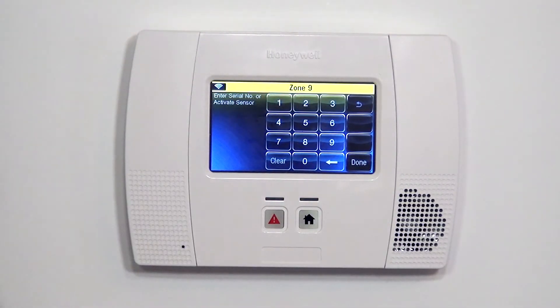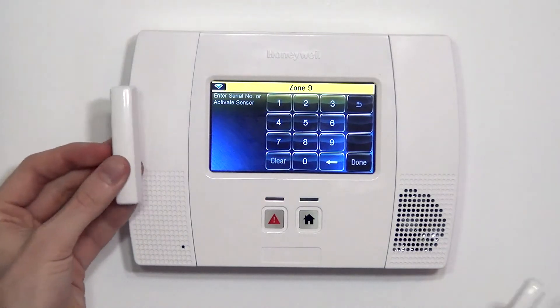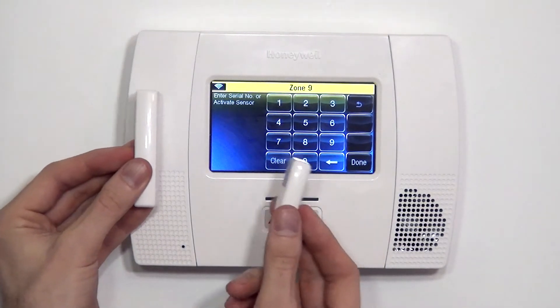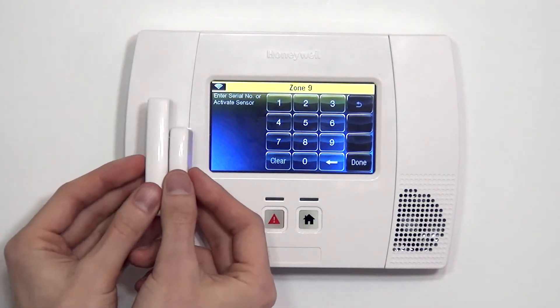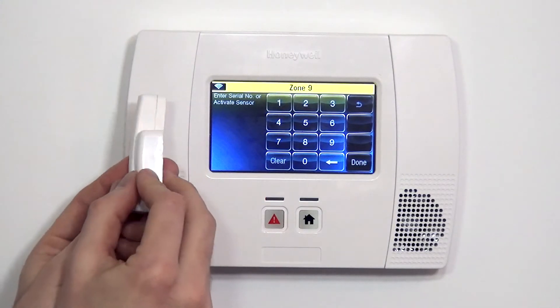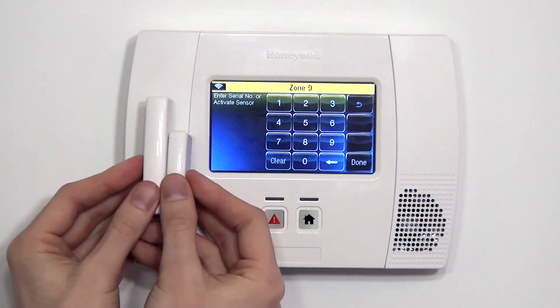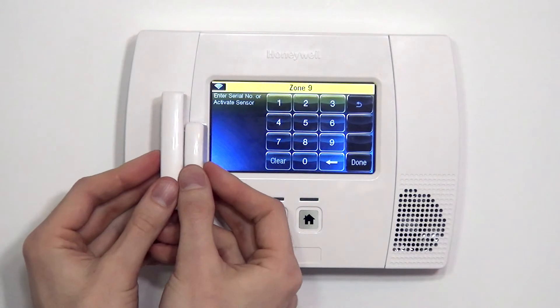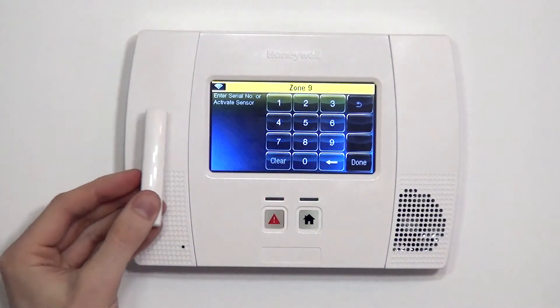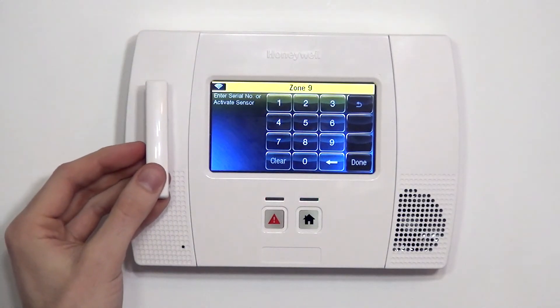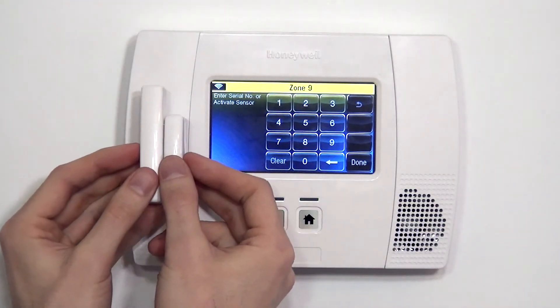To do that, we can simply activate the device three times. To activate a door contact or window sensor, we simply put the magnet next to the two hash marks, the side of the sensor that it needs to have the magnet, and we pull it apart. Activation number one, you heard the panel beep, and now we go and close the door again.